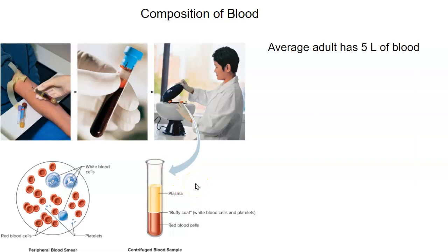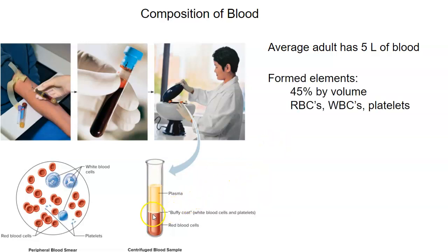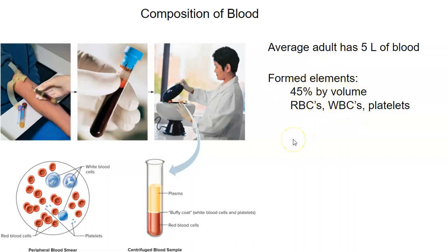The average adult has about five liters of blood, which varies with gender and size — larger men have more blood volume. The heavier components are called the formed elements, which are mostly red blood cells; less than 1% are white blood cells and platelets. The formed elements account for 45% of blood by volume.